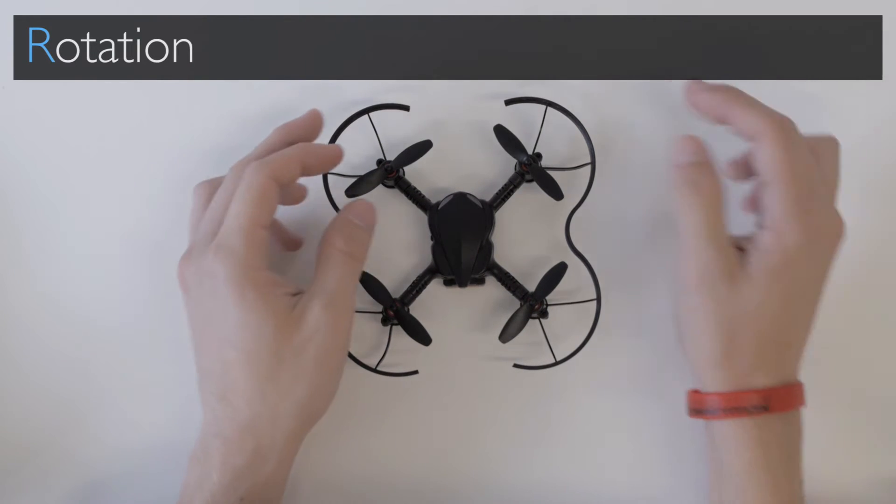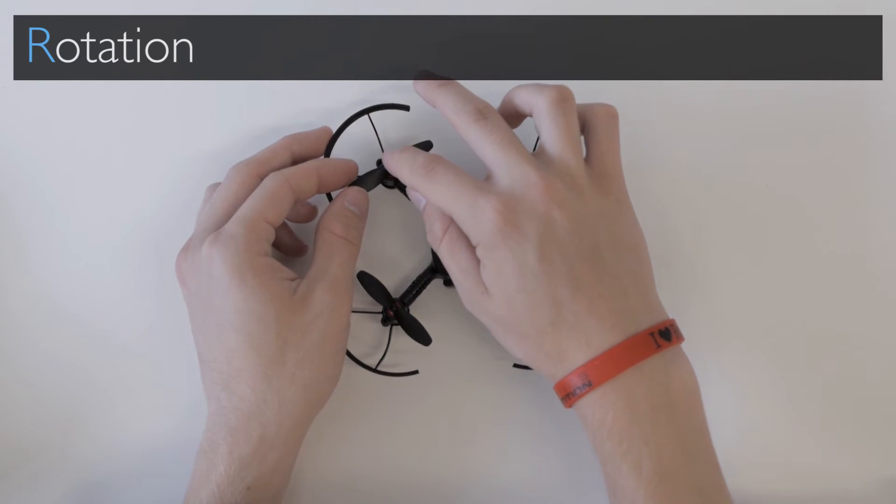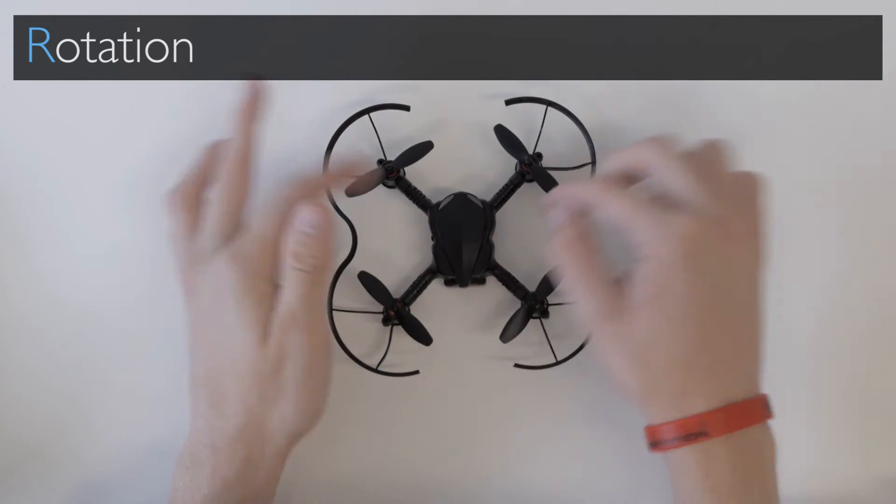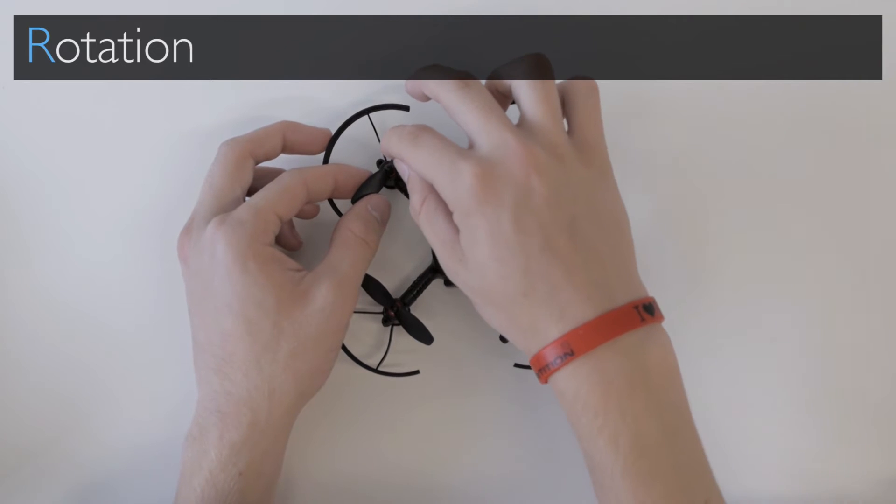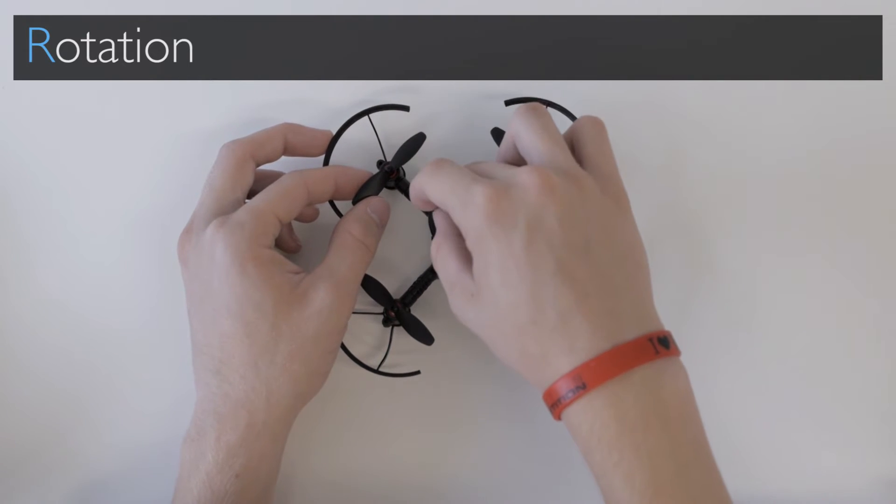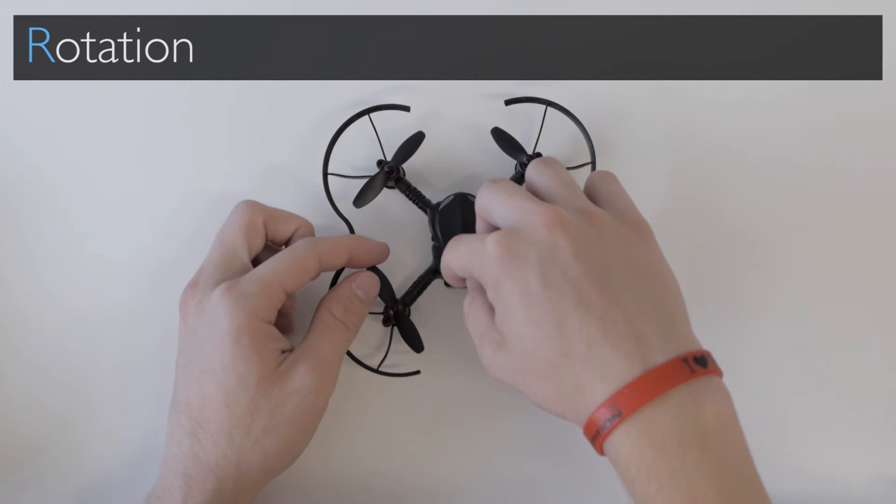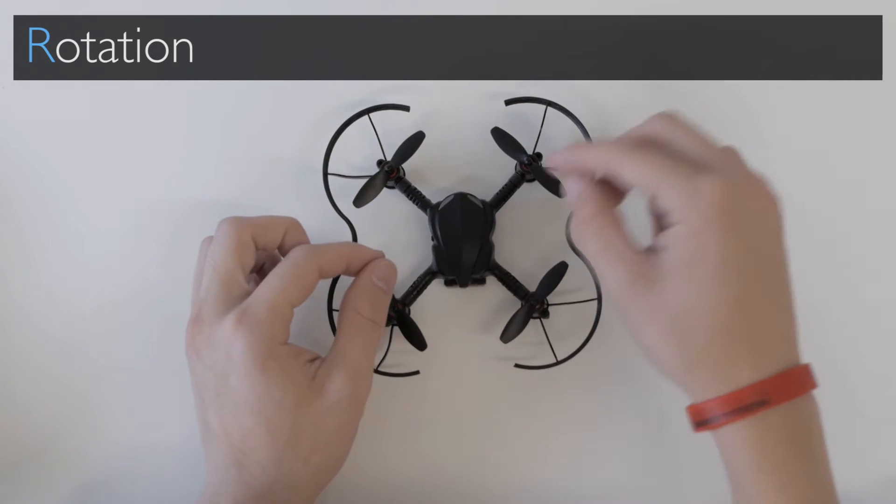To do that, check that the arrows are pointing towards either the top or bottom of the drone, not the sides. Here you can see the arrow going towards the top of the drone. Here the arrow's going towards the bottom, and here towards the bottom.